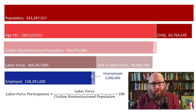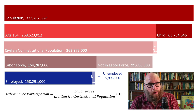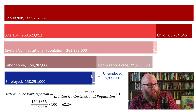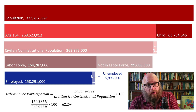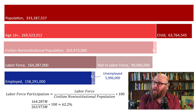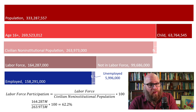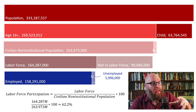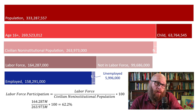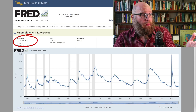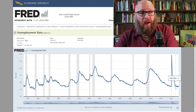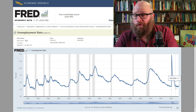The labor force participation rate takes the total size of the labor force and divides it by the civilian non-institutional population, sometimes called the working age population. In the United States in 2022, that number was 62% — meaning 62% of the available adult population is actively inside the labor force, either having a job or actively looking for one. At the time of recording, the current unemployment rate is 3.8% and has been hovering at that level for a year and a half.